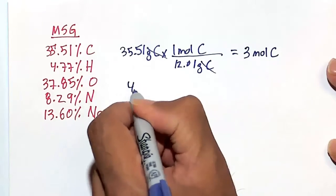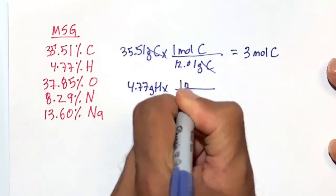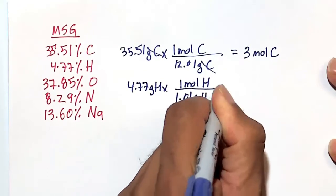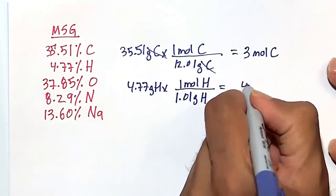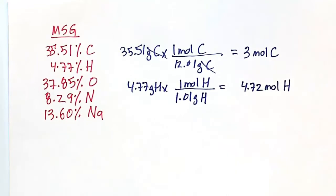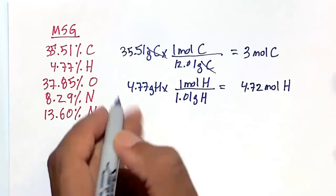4.77 grams of hydrogen. One mole of hydrogen has about 1.01 grams of hydrogen, and on my calculator, I'm going to go ahead and, this is not a clean number, so I'm just going to put it to two decimal places, 3 sig figs, 4.72 moles of hydrogen.